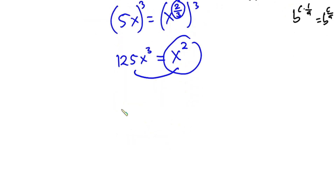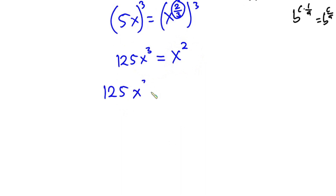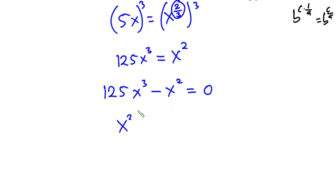So we have 125 times x to the third power minus x to the second power, and this is equal to 0. Looking at this equation, we can factor out x to the second power, so we have x squared times (125x minus 1) equals 0.